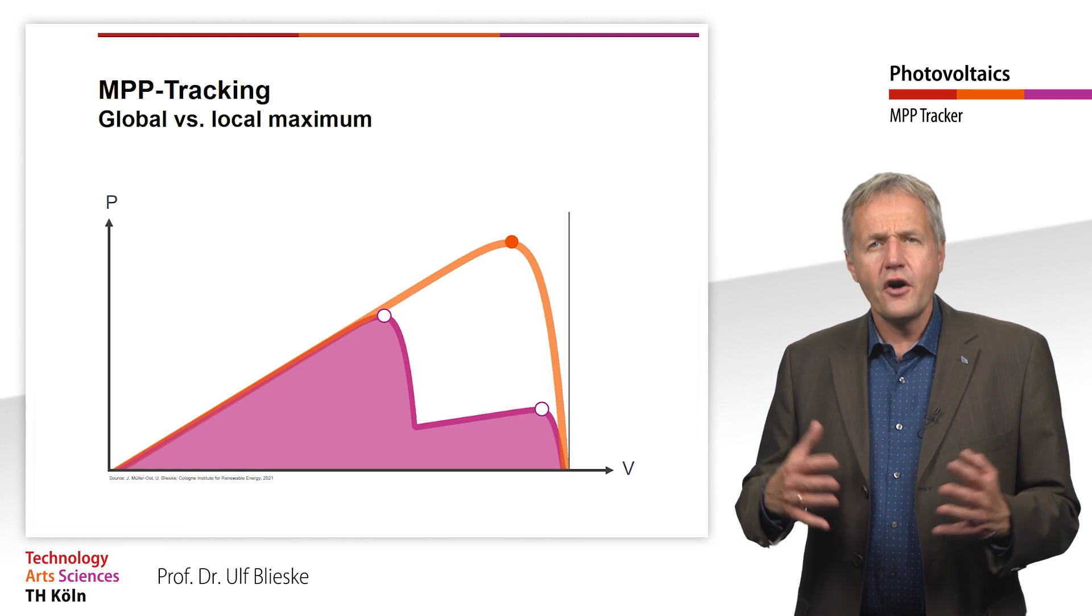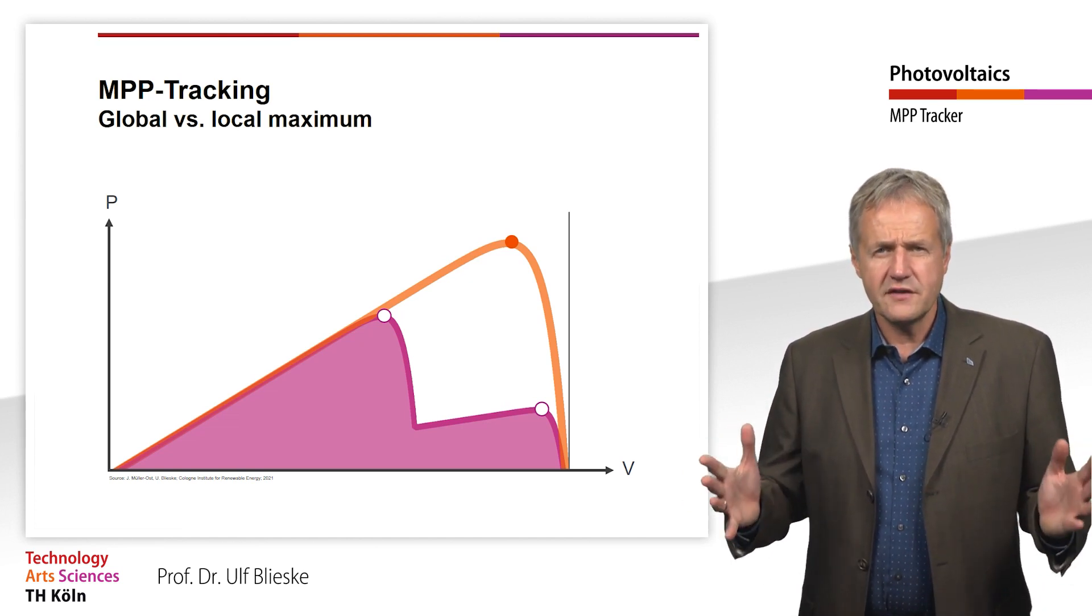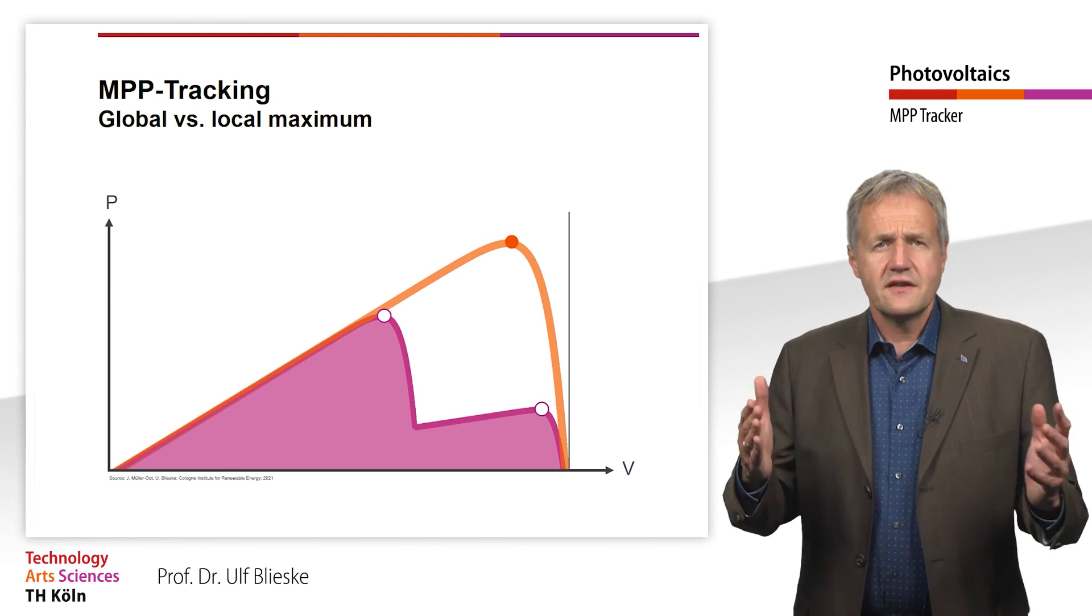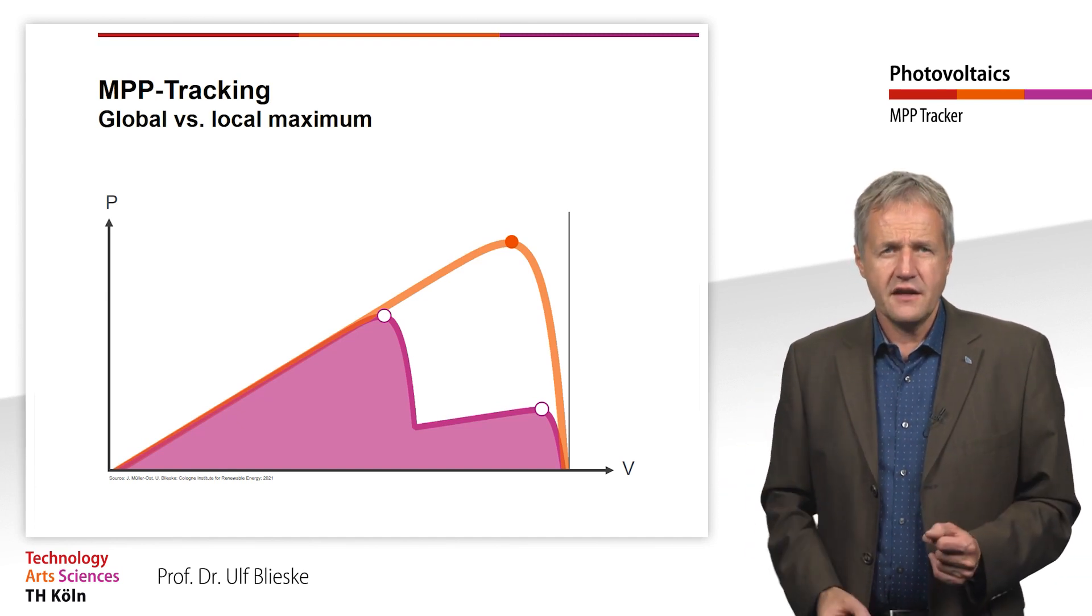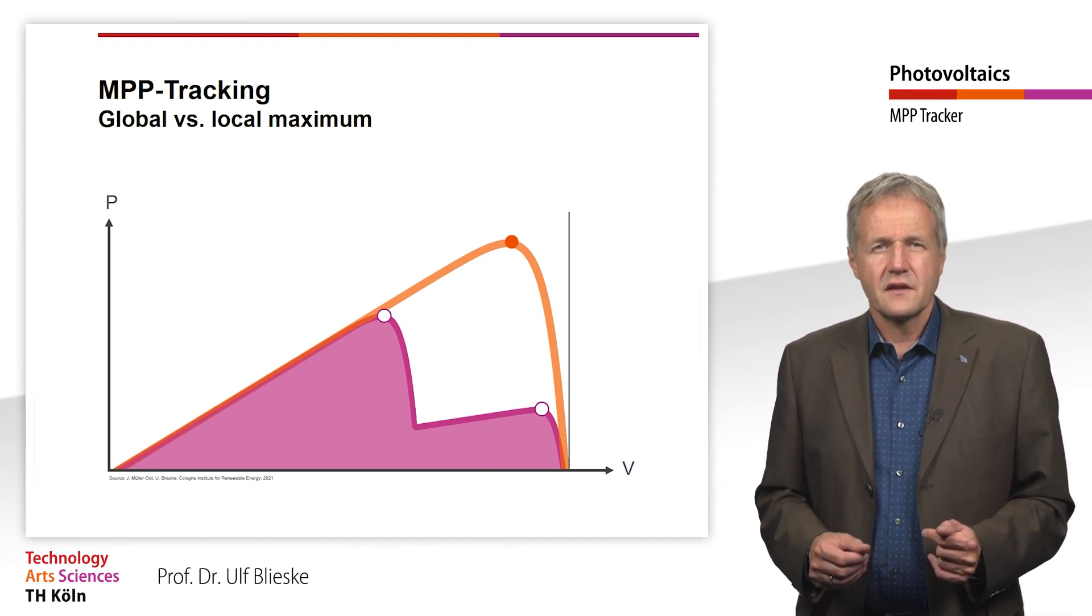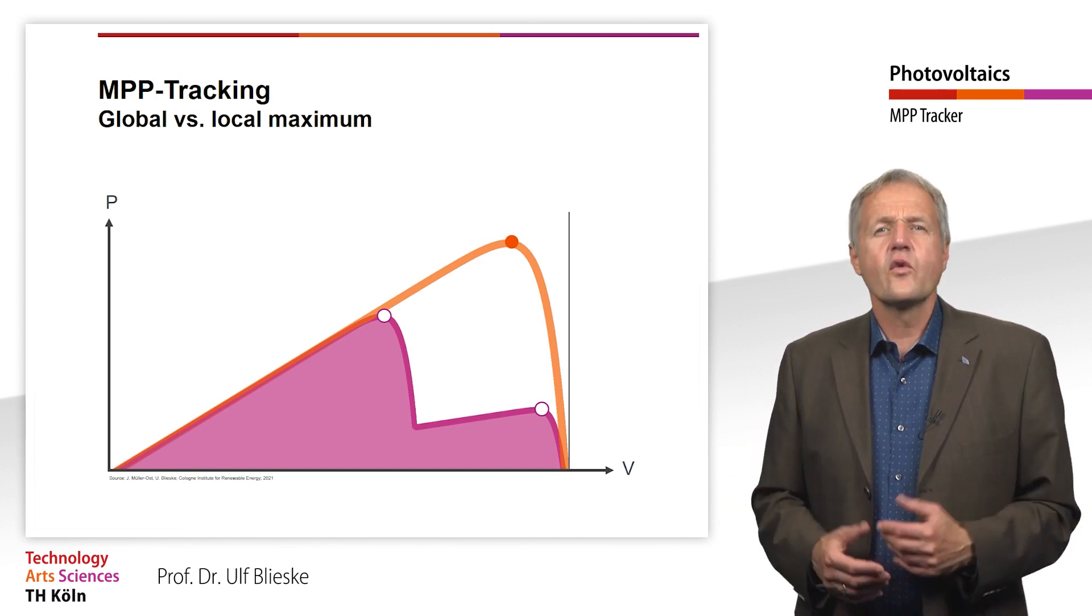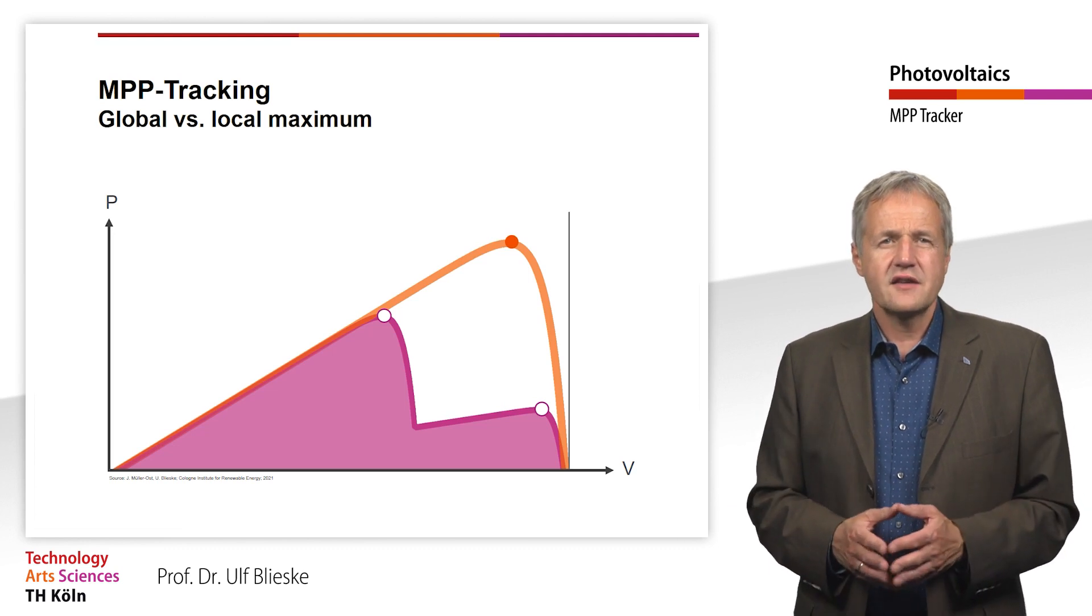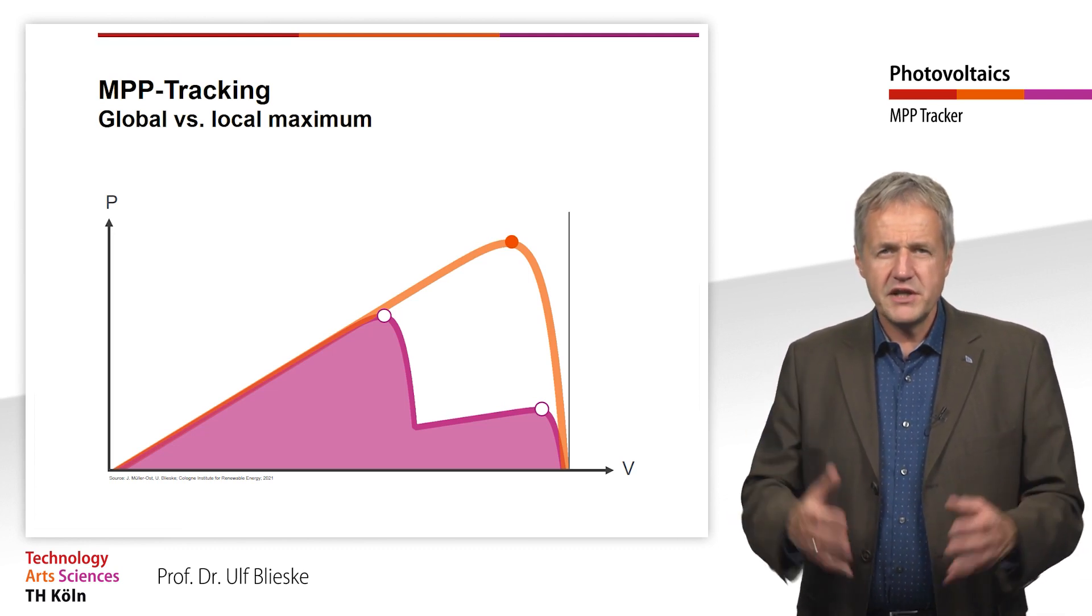If shading is unavoidable when planning a PV system, it is essential to ensure that the inverter is suitable for shading.